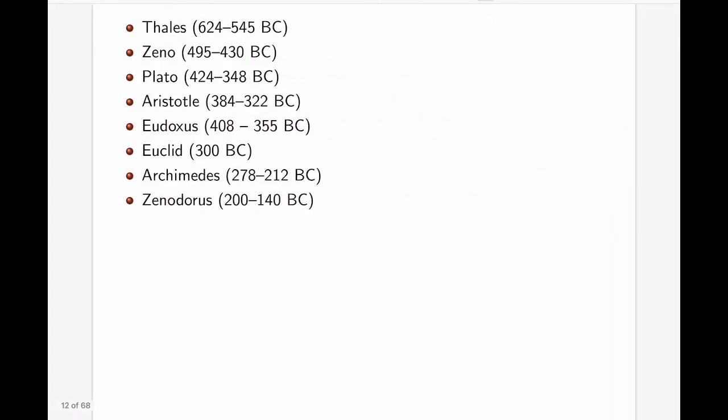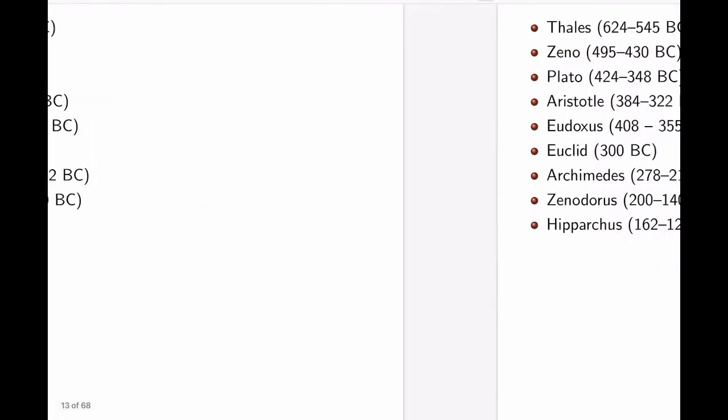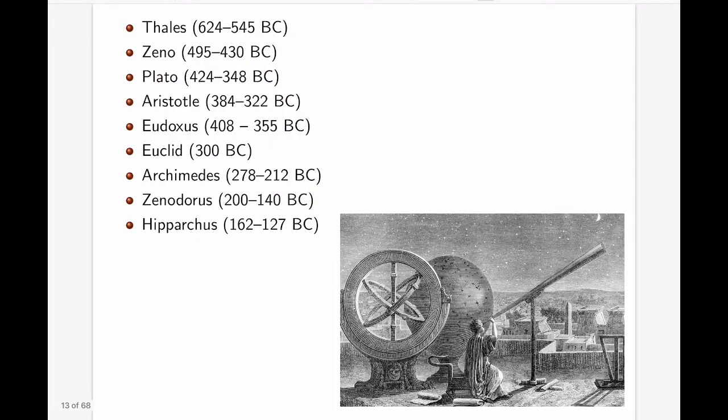But we also have people like Xenodorus, who, for example, proved that a regular polygon encloses a larger area than any other polygon of the same perimeter. And this isoperimetric problem, not found in Euclid or Apollonius or Archimedes, is one of his unique achievements. We have Hipparchus, the greatest astronomer of antiquity. He is considered to be a founder of trigonometry and is almost famous for discovering the precession of the equinoxes.